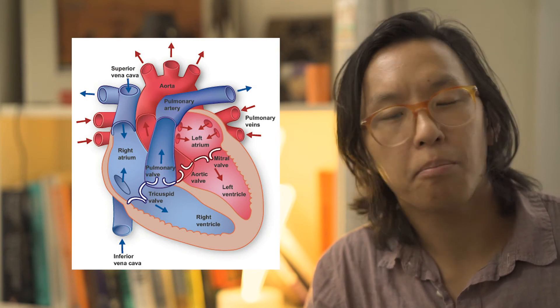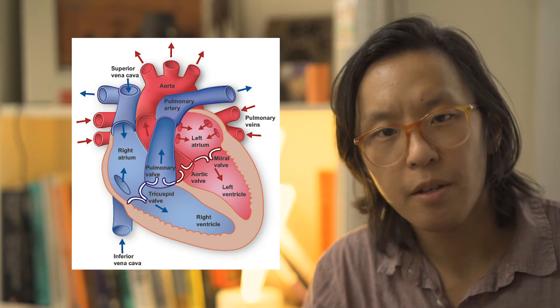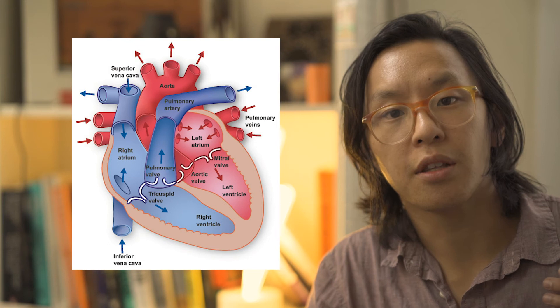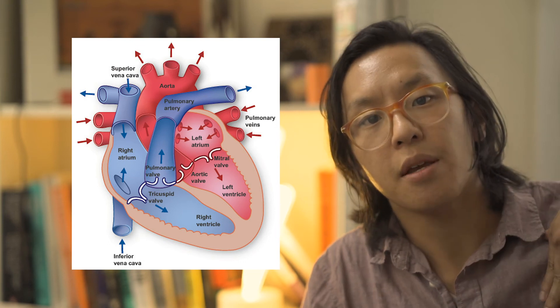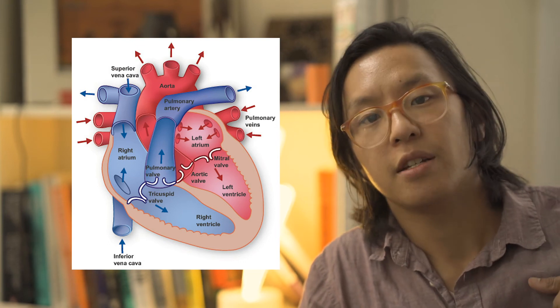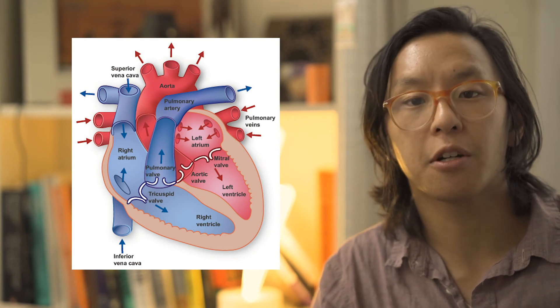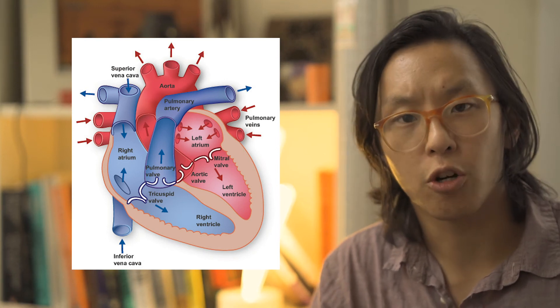It's going to return back to the heart via the pulmonary vein into the left atrium, down the bicuspid valve, down into the left ventricle. Typically, if it's anatomically correct, the left ventricle is the largest chamber.